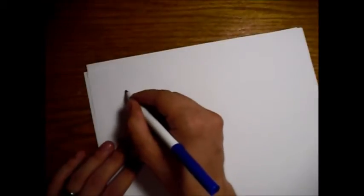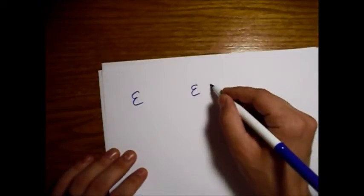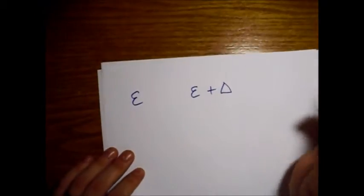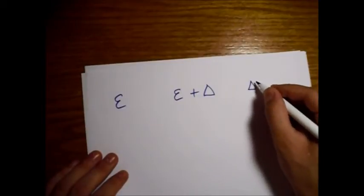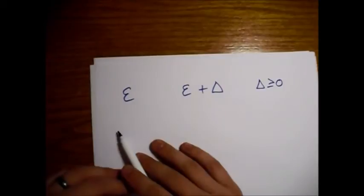All right, so we're going to look again at the two state, or two level system. So we have two energy states. We have one that we'll just call epsilon, and one that will be epsilon plus some delta, where delta is greater than or equal to zero. So this one's higher than the other.